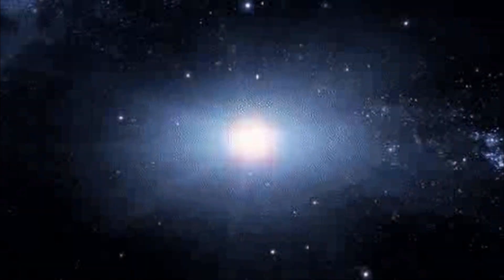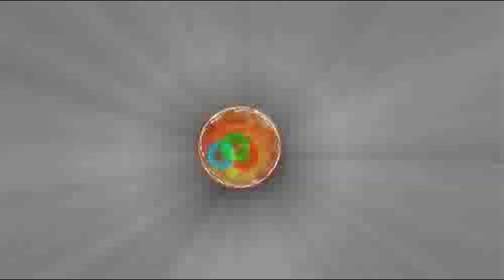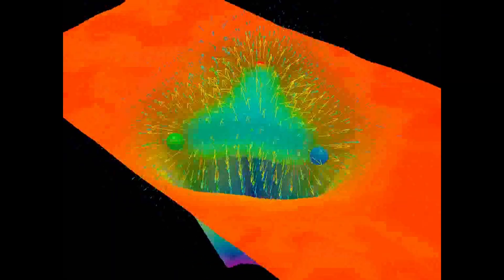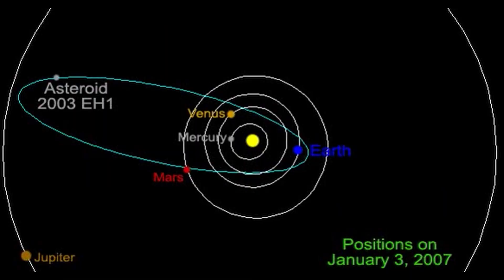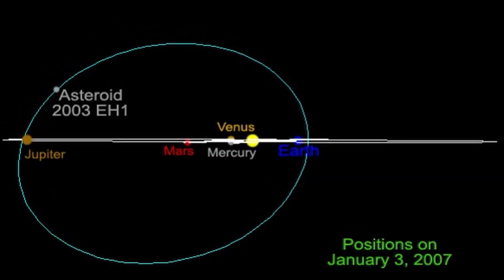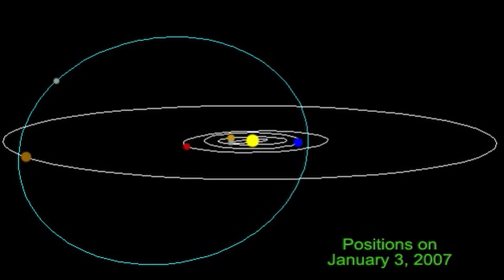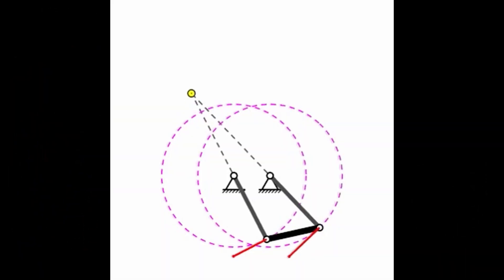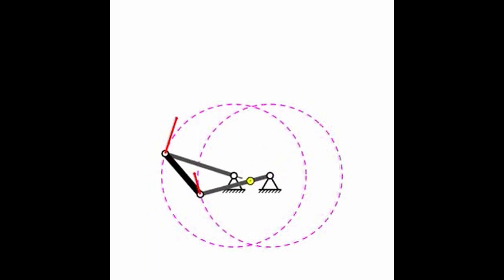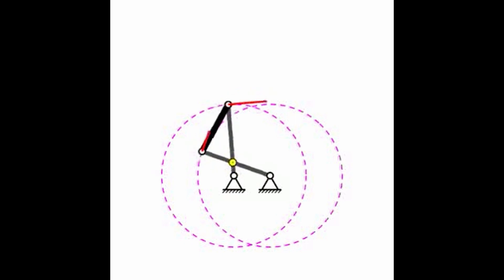4. Spin Angular Momentum. Apart from orbital angular momentum, particles such as electrons possess another form of angular momentum called spin. Spin is an intrinsic property, and particles are often treated as point-like entities with a spin quantum number S associated with them. The magnitude of spin angular momentum is given by S² = ℏ²s(s+1), where s is the spin quantum number. For electrons, s has a fixed value of 1/2, leading to two possible spin states: spin up (mₛ = +1/2) and spin down (mₛ = -1/2). Spin plays a crucial role in determining the behavior of particles in magnetic fields, and is fundamental to the structure of atoms and the properties of materials.